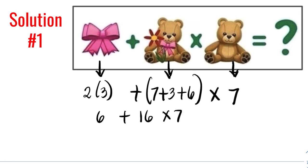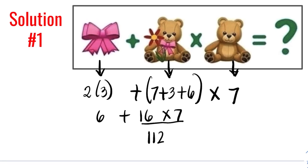Using order of operations, we need to simplify 16 times 7, which is 112. So now we have 6 plus 112, which is equal to 118.